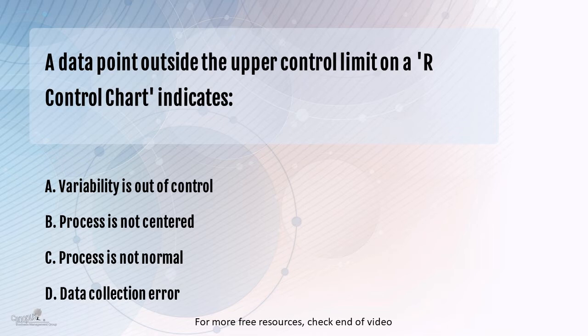So in this case of a range chart, we have used subgroups. Let's assume the subgroup size is four, which means every time we collect four samples and we find out the range, the difference between the highest and the lowest value of those four data points, and plot that as range in the R chart. And if that value falls outside the control limit, the upper control limit of the range chart, then what does it represent?